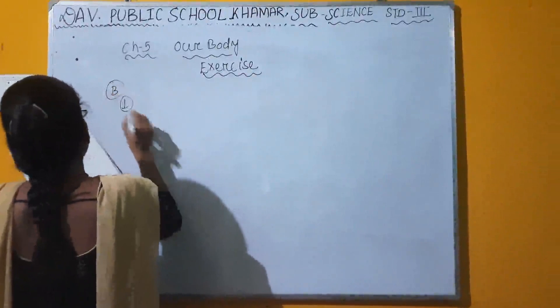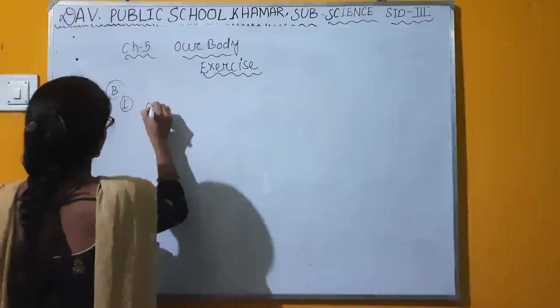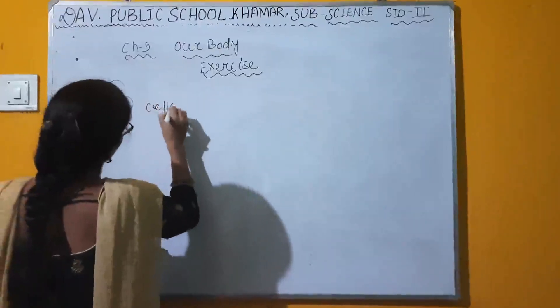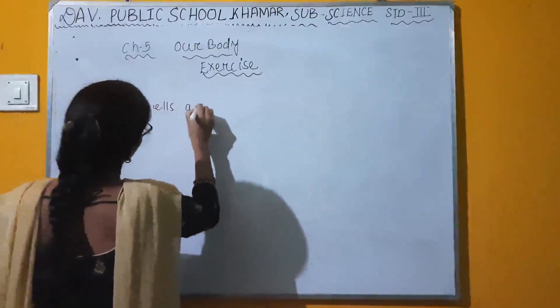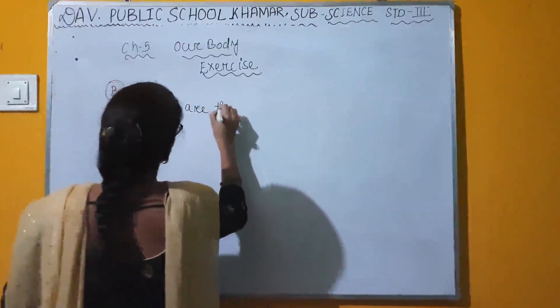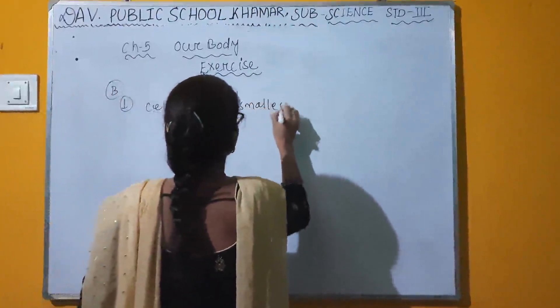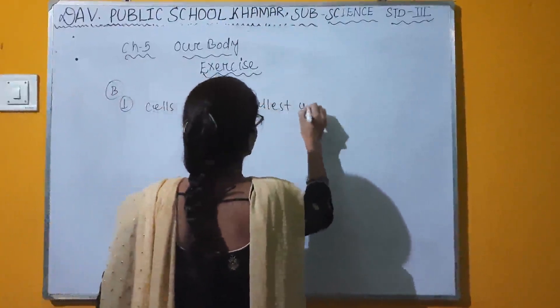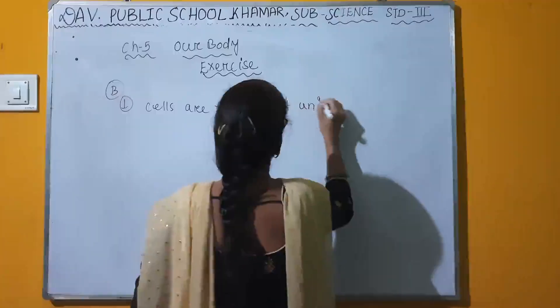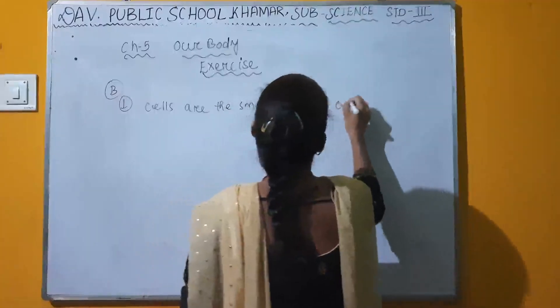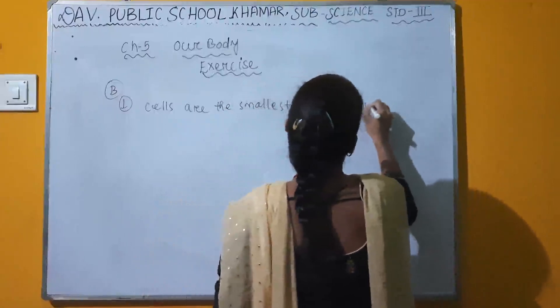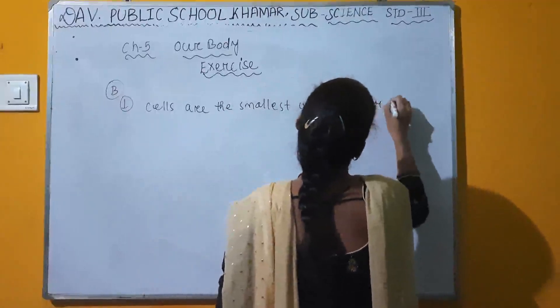What are cells? Cells are the smallest unit of our body.